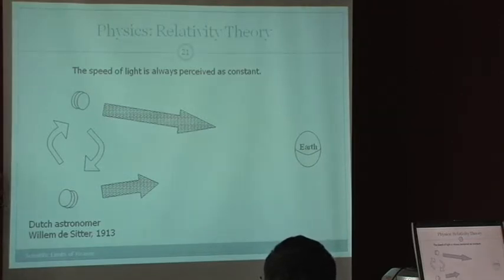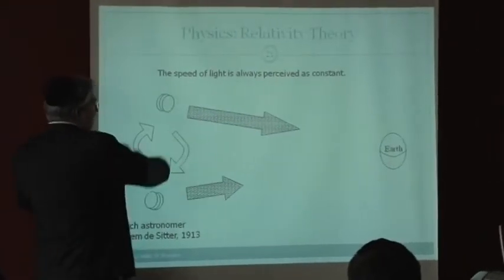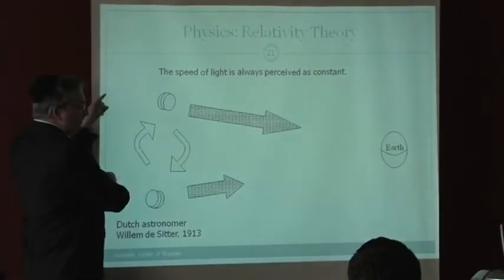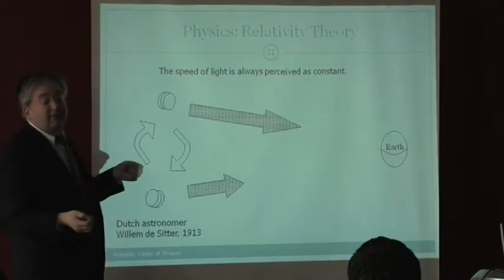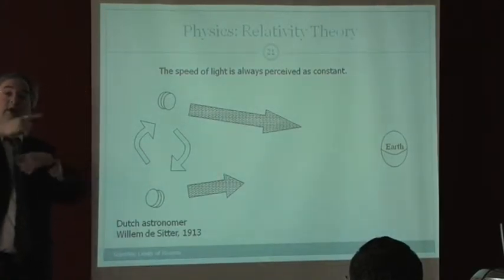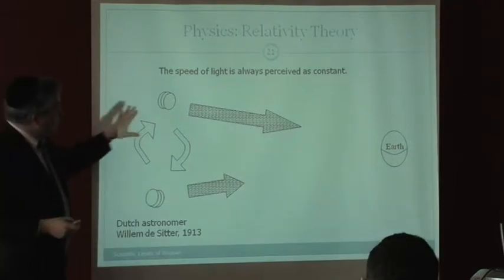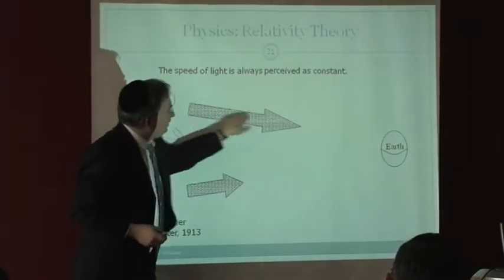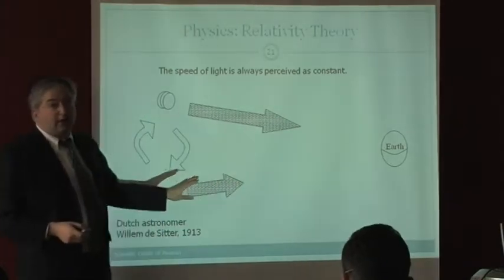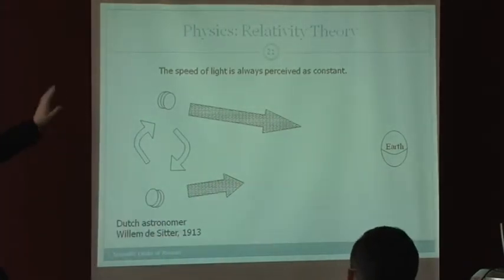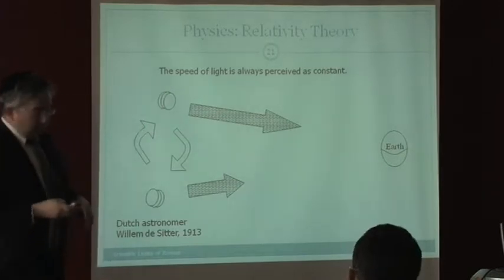If that was the case, then viewing the binary star going around, it would come out discombobulated. This one should be seen first, and that should be second, and this would be second. It would be all confused. And he says it's not confused. We can see binary stars going around each other.